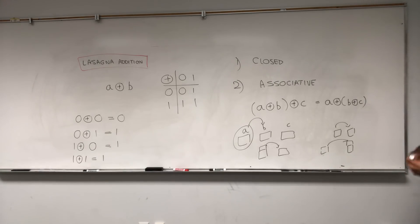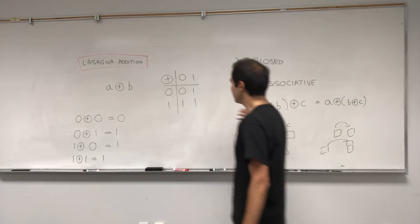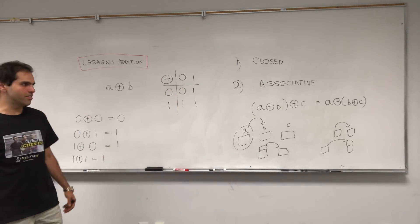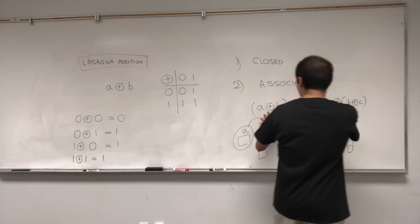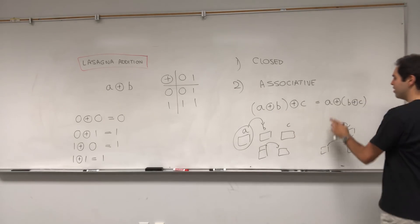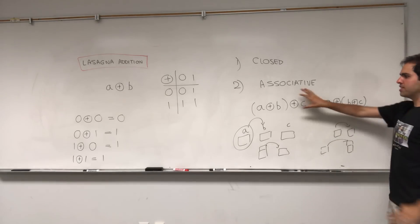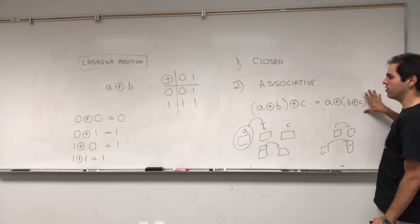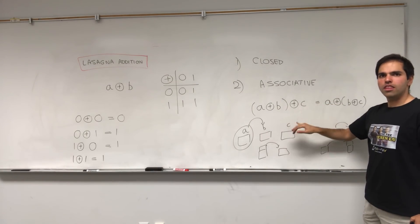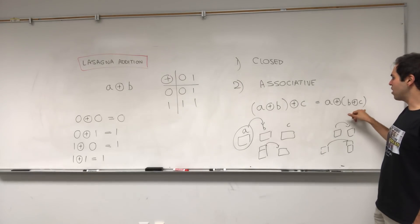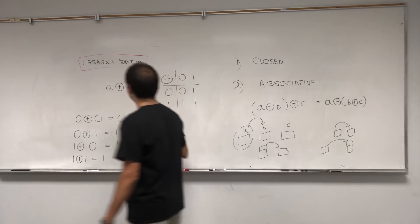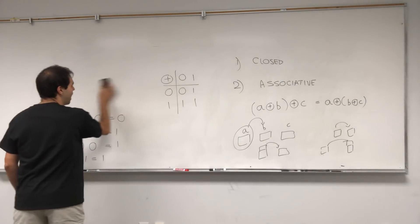It might seem obvious, but here's a little proof. The only way to get zero lasagnas is to start with zero lasagnas. So the only way this expression could be zero is if all of A, B, and C are zero — but then the other side is also zero. And if the result is one, then one of them must be non-zero, so the whole thing is non-zero, therefore one. So you do have associativity.